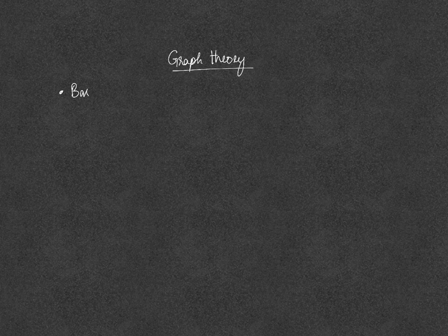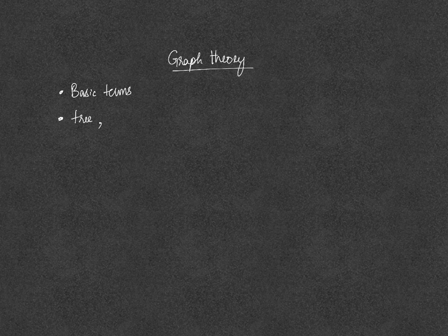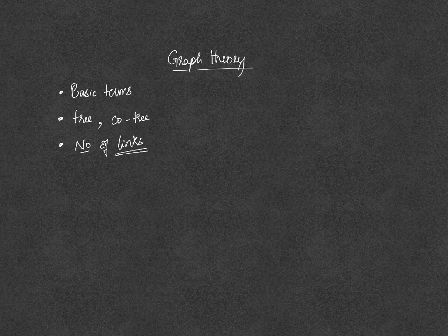In this lecture, we will discuss some basics of graph theory. We will discuss some basic terminology that is used, like what is meant by a node, what is meant by a path, and a loop. Next, we will discuss what is meant by a tree and what is meant by a co-tree. And lastly, we will discuss the formula for number of links, and also what is meant by links.